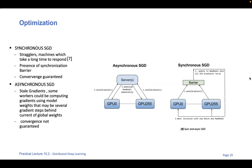The problem with asynchronous SGD is that convergence of the model is no longer guaranteed, as the exchange of weights between models at different stages of training might result in poor training outcomes.